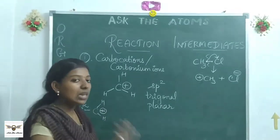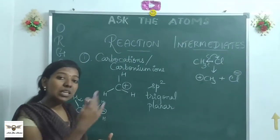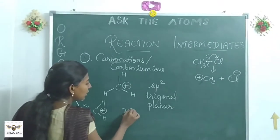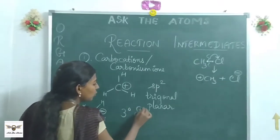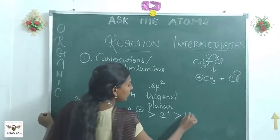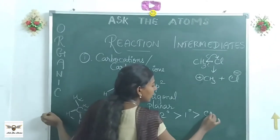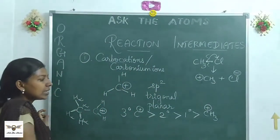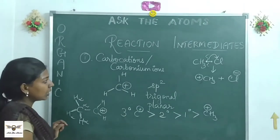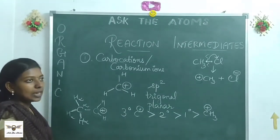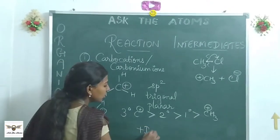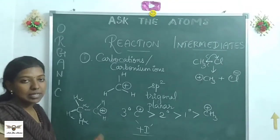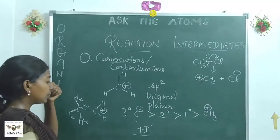The greater the number of alpha hydrogens, the more stable the carbocation. With three alpha hydrogens it is more stable, with five even more, and with seven even more. That is why tertiary carbocation is more stable than secondary, which is more stable than primary, which is more stable than methyl. This is entirely dependent on the hyperconjugative effect, and the second effect is the +I (inductive) effect. Both together give rise to stability.